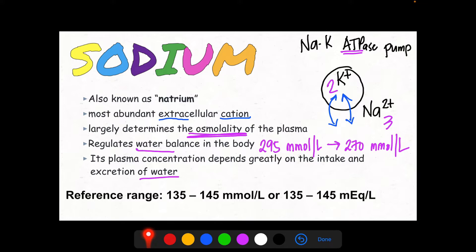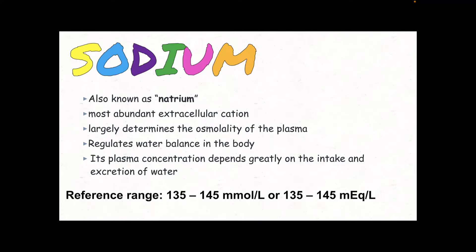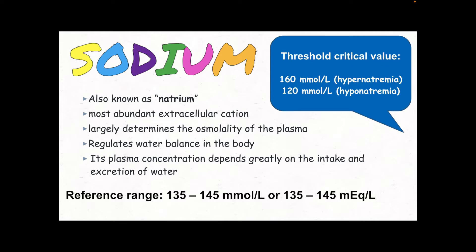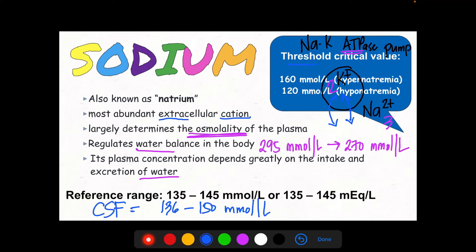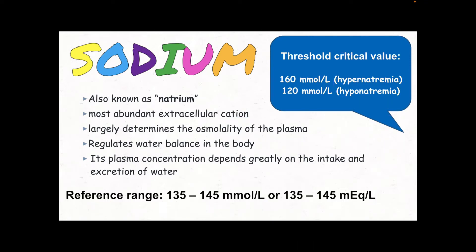For sodium reference ranges, serum sodium is 135 to 145 millimoles per liter, and CSF sodium is 136 to 150 millimoles per liter. The renal threshold for sodium is 160 millimoles per liter as the upper critical value and 120 millimoles per liter as the lower critical value, representing the concentration up to which sodium in the blood is prevented from passing into the urine.